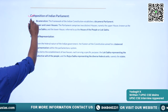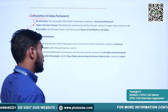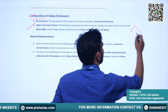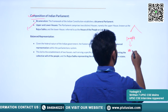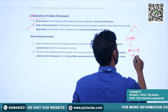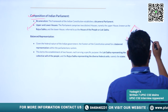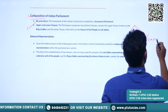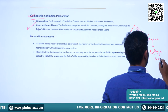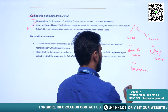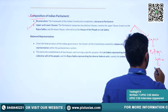Now we will understand the composition of the Indian Parliament. India has a bicameral system — two houses. One house represents the people directly; we call this the House of People, or famously, Lok Sabha. The other house, representing the states and federal units, is called Rajya Sabha. Lok Sabha is also known as the lower house, and Rajya Sabha as the upper house.